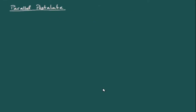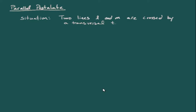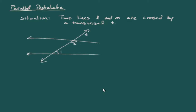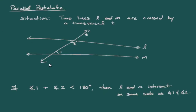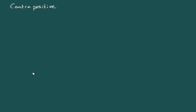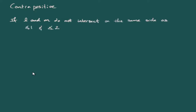Now, what does the parallel postulate say? We have two lines, L and M, crossed by a transversal T. If the sum of angle 1 and angle 2 is less than 180 degrees, then lines L and M intersect on the same side of the transversal as angle 1 and angle 2. The contrapositive of the parallel postulate then says: if L and M do not intersect on the same side of the transversal, then the sum of angle 1 and angle 2 cannot be less than 180 degrees.